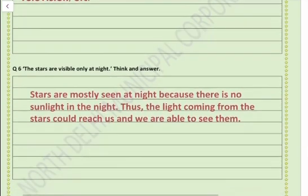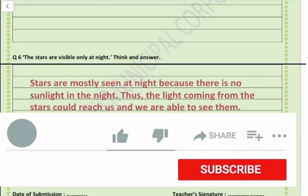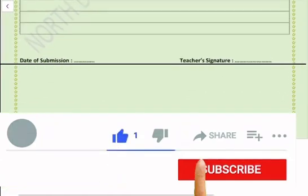Question number 6: The stars are visible only at night. Think and answer — what could be the reason that stars are visible only at night? We cannot see stars during the day because there is sunlight. Due to sunlight, stars are not visible to us. So the answer is: stars are mostly seen at night because there is no sunlight at night, and the light coming from the stars can reach us and we are able to see them.